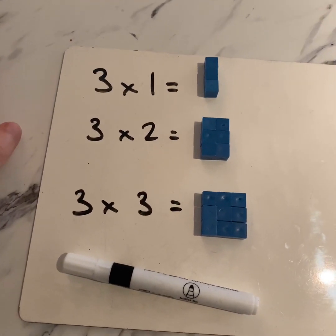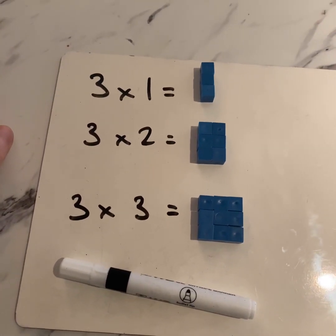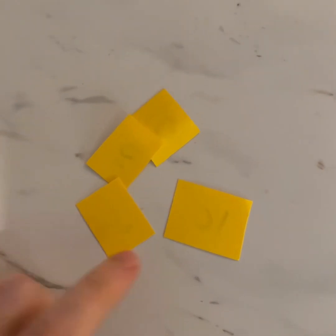Welcome aboard for a quick look at the three times table. For this activity, it would be amazing if you had what we call concrete materials — basically cubes or counters. It could be Lego, Duplo, whatever it is. But if you don't have them, don't worry — you can just get yourself bits of paper and cut them up into cubes.